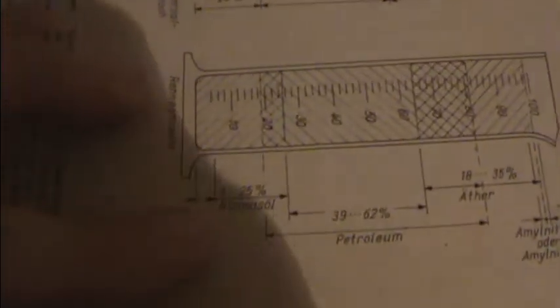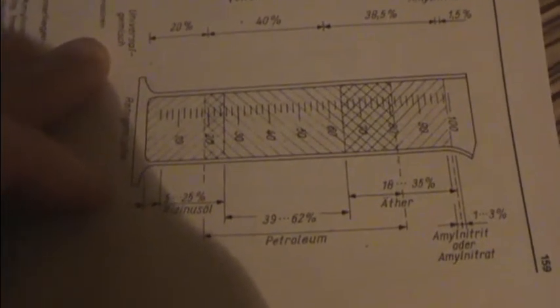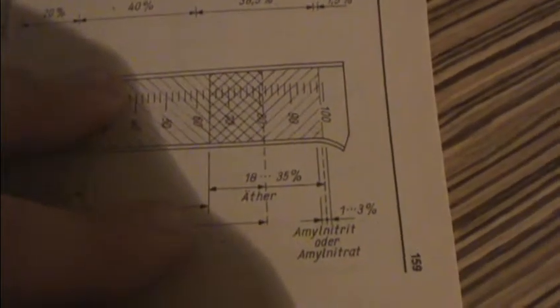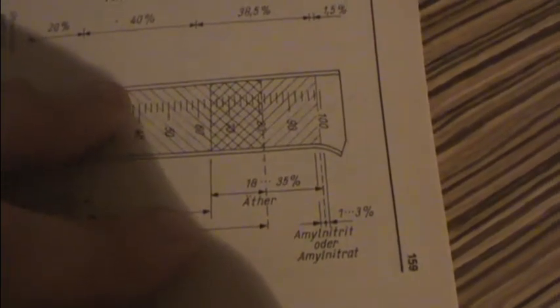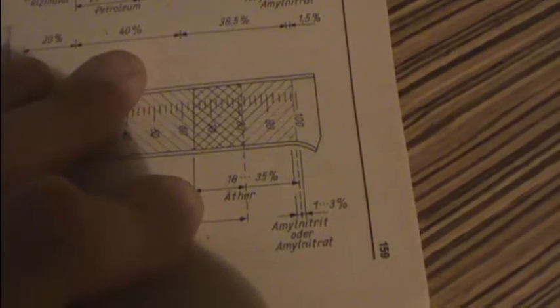Third mixture is basic mixture. And there is 5-25% of castor oil, 39-62% of petroleum, 15-35% of ether, and for addition 1-3% amyl nitrate or amyl nitrite.